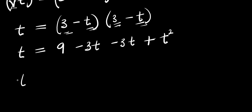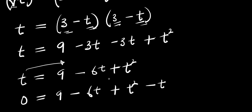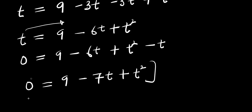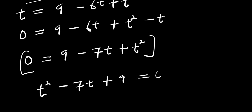So from here we have t = 9 - 6t + t². Moving t over to the right side gives us 0 = 9 - 6t + t² - t, which simplifies to 0 = 9 - 7t + t². Rearranging, we have t² - 7t + 9 = 0.